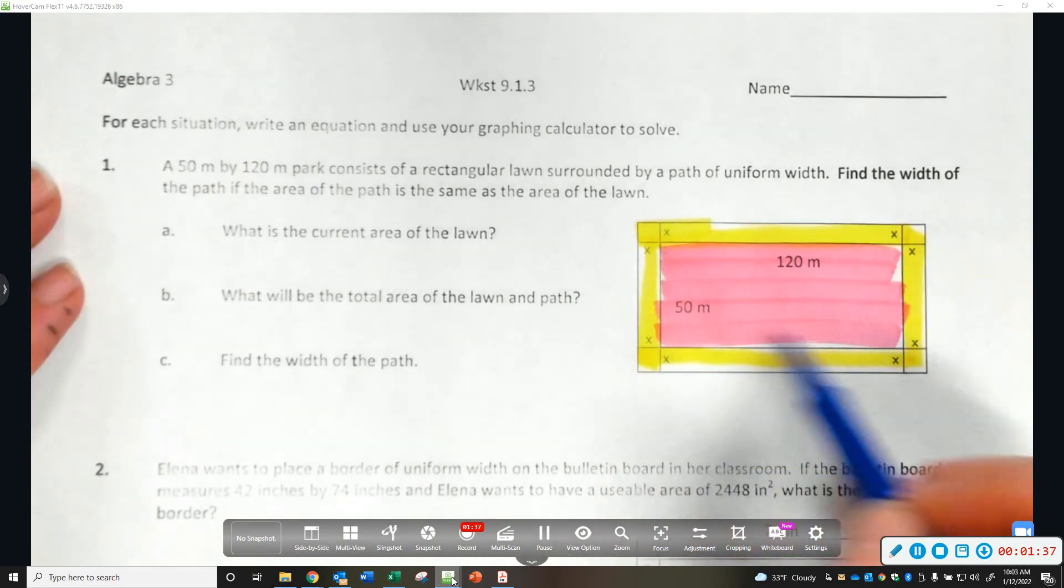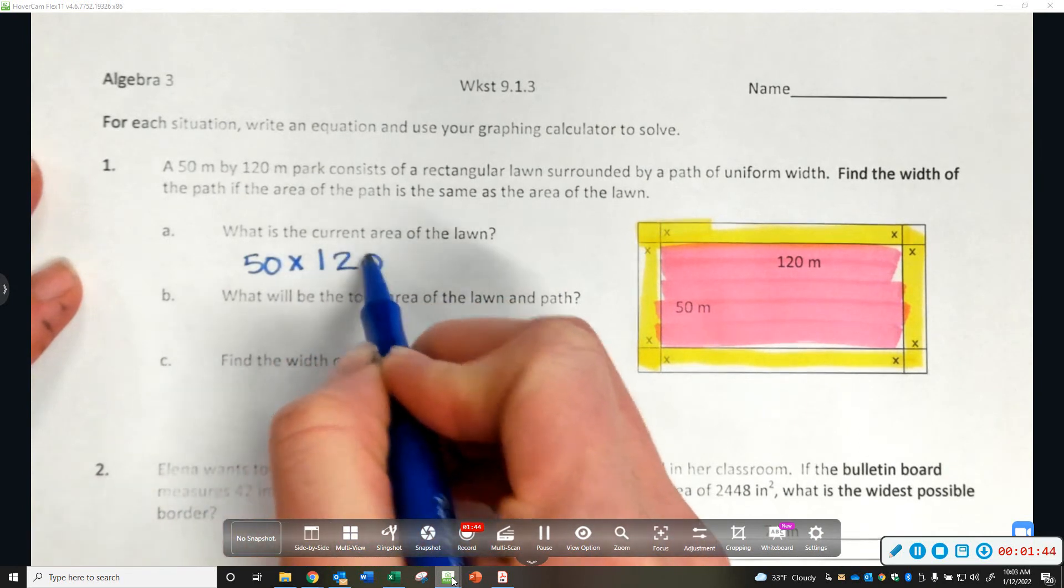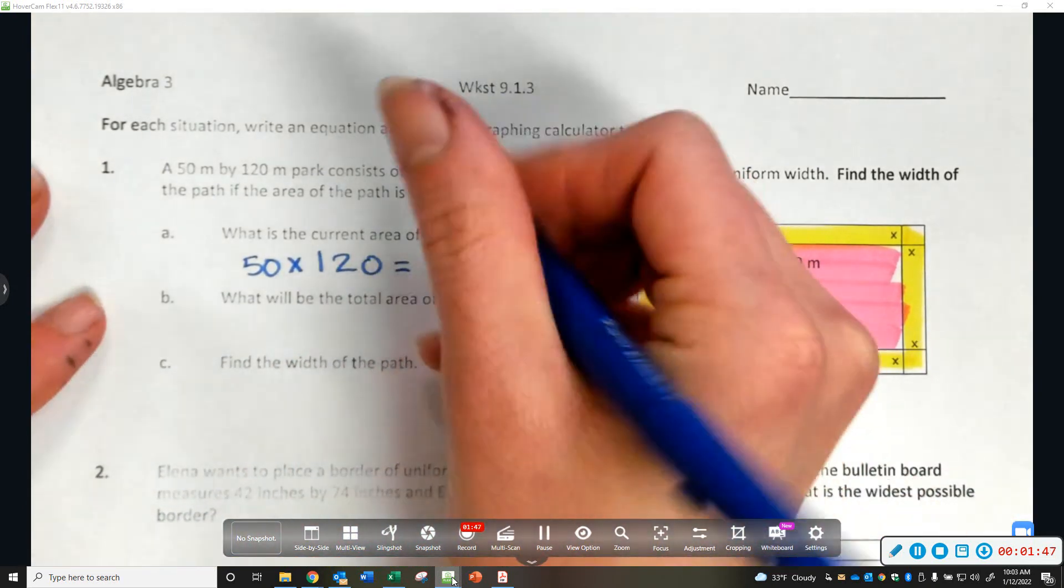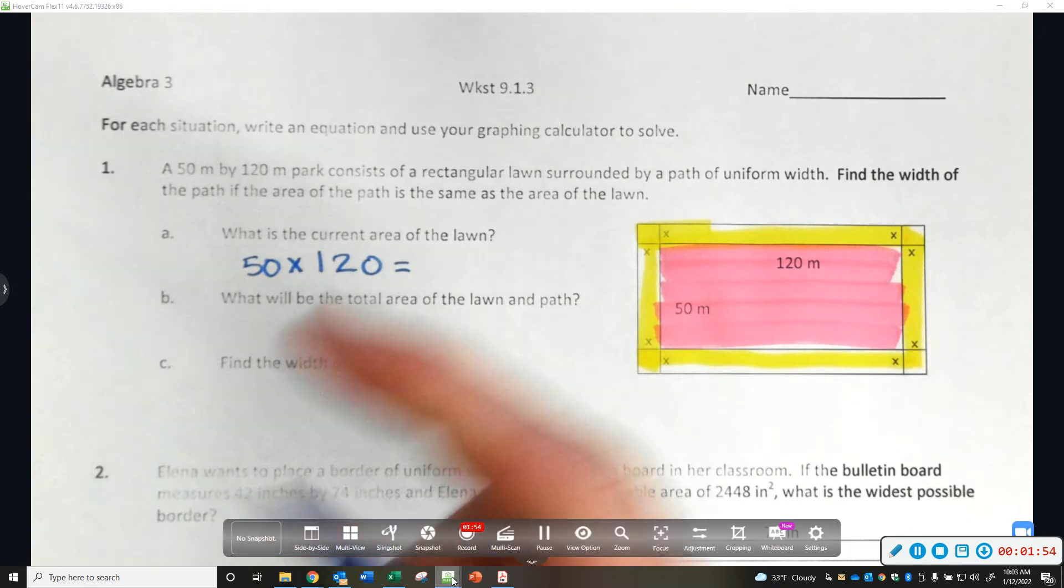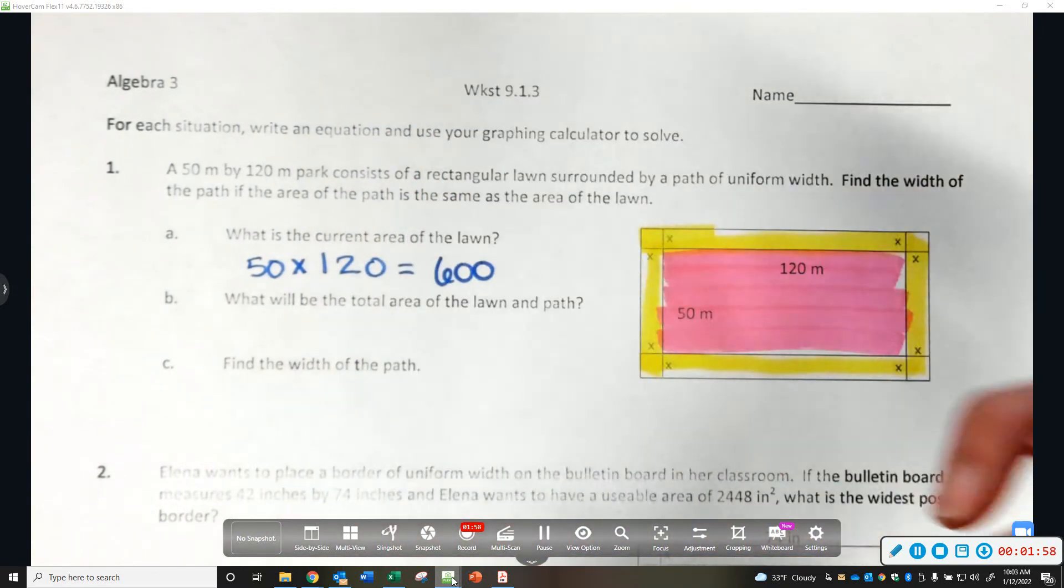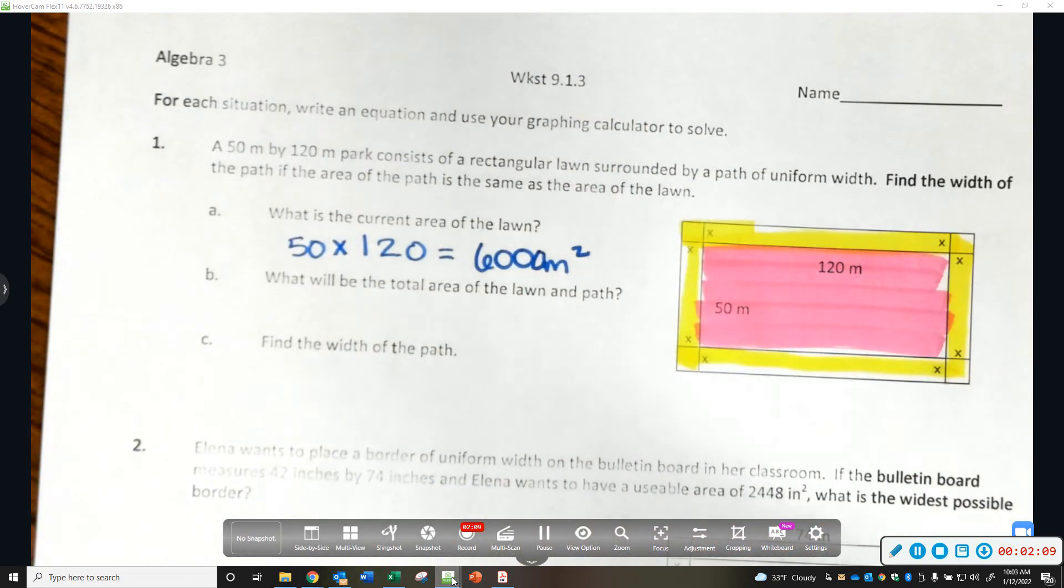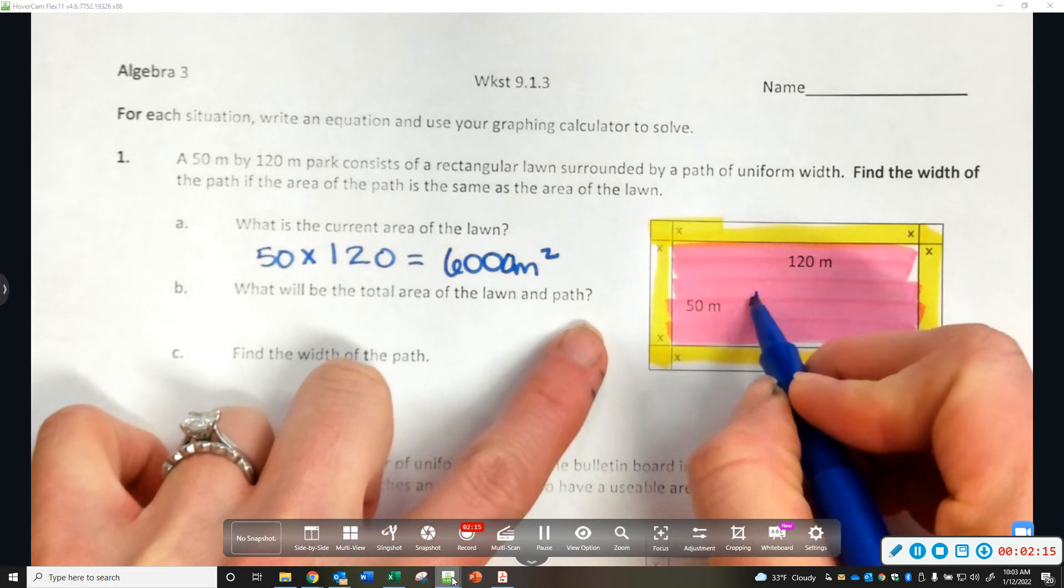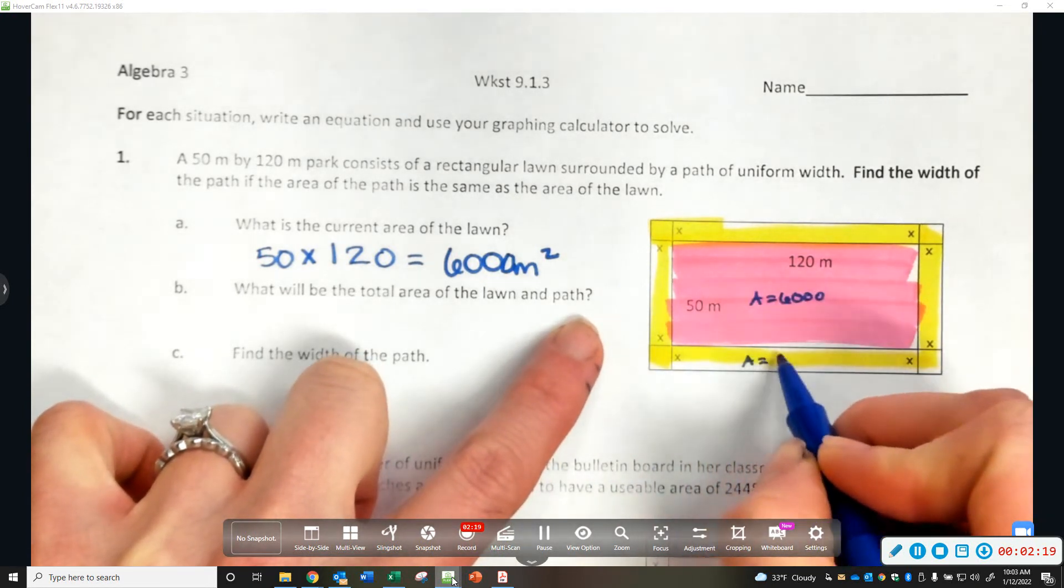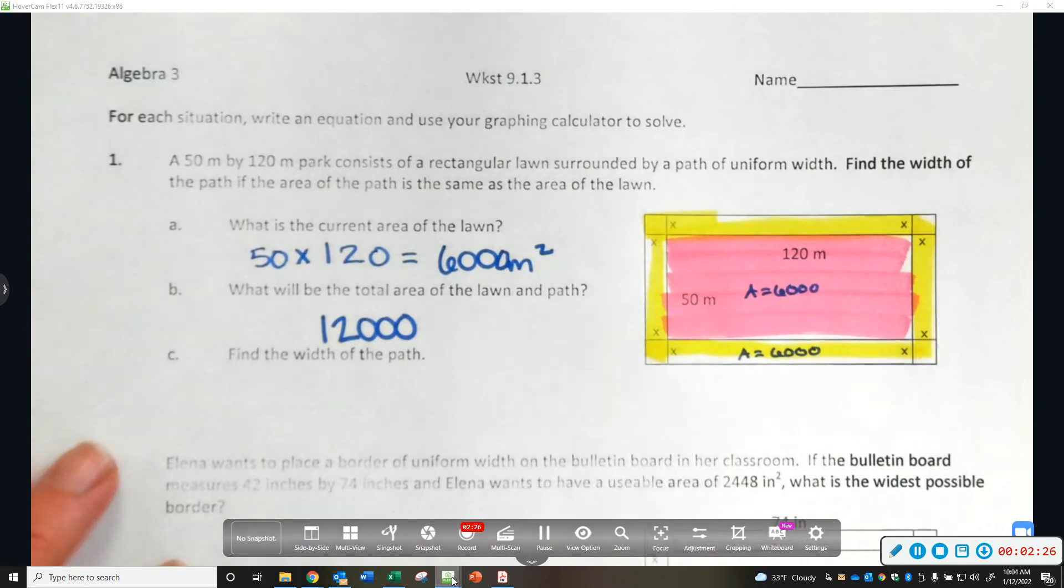So what is the current area of the lawn? Well, it's a rectangle. Area of a rectangle is length times width. 50 times 120. So what is that? 6,000 meters squared. What would the total area of the lawn and the path be? Well, if this area is 6,000, and this area is 6,000, together they will be 12,000.